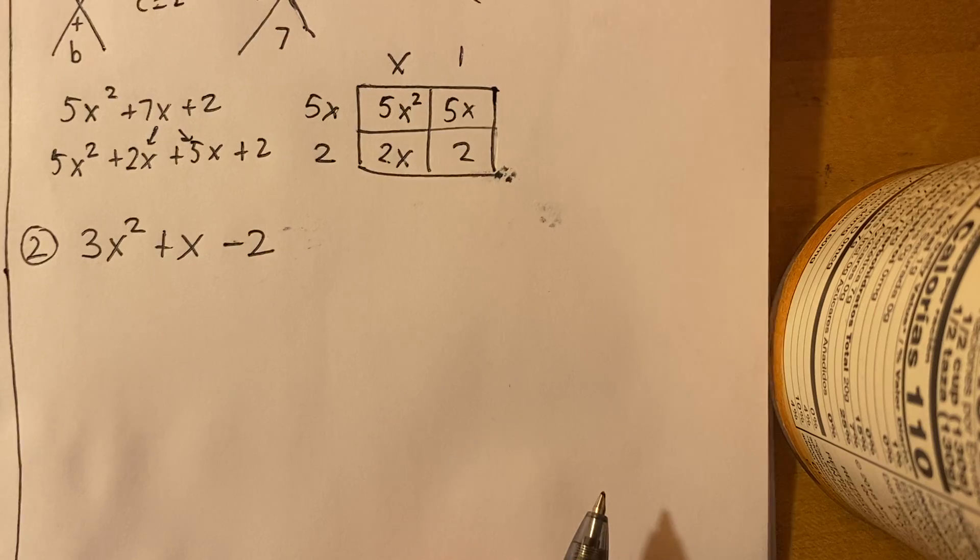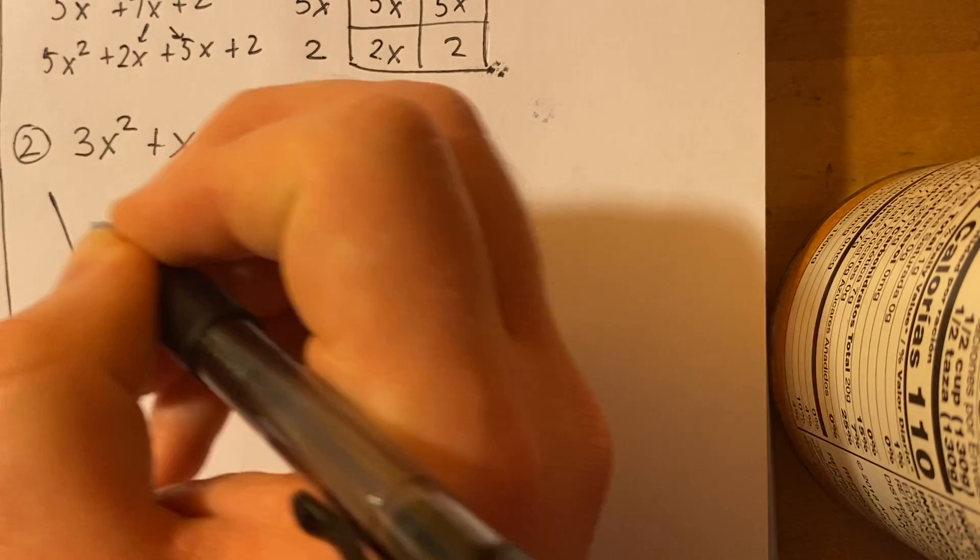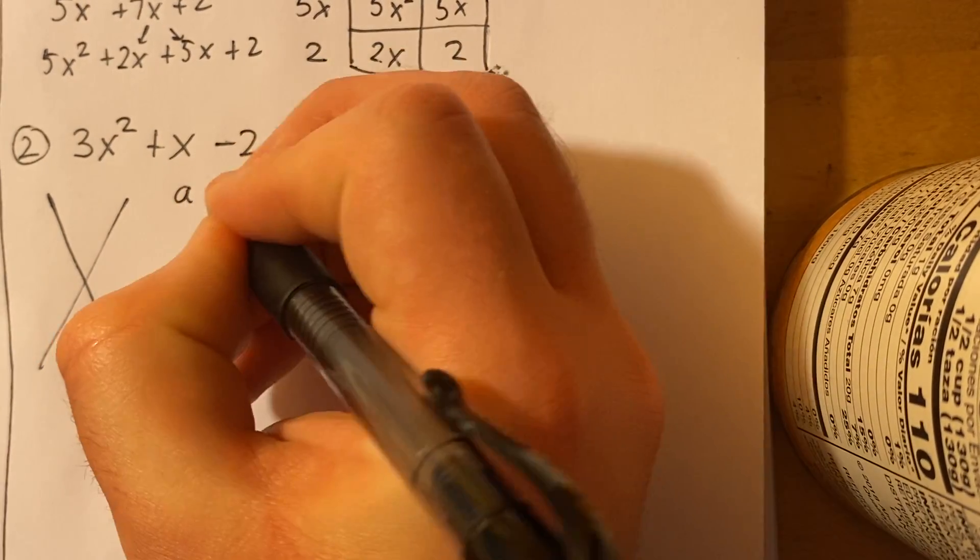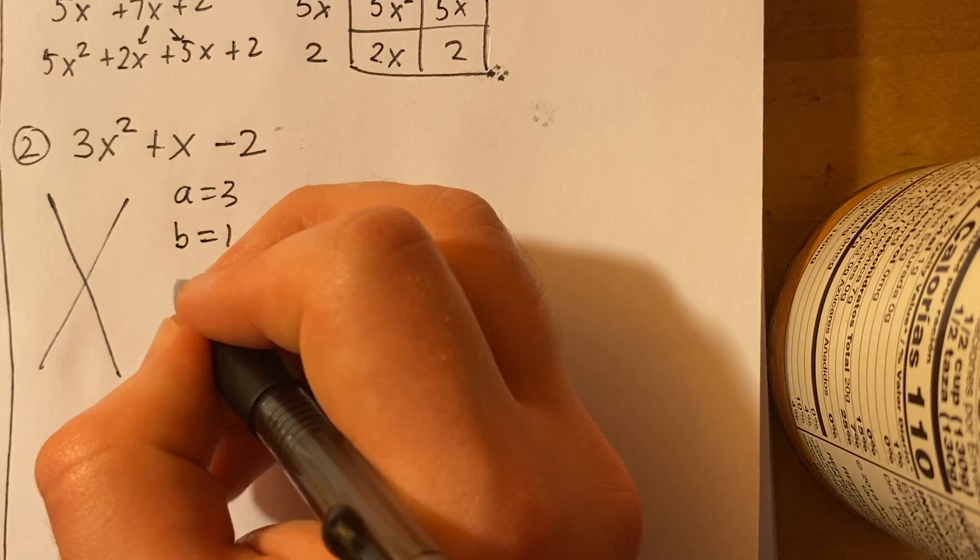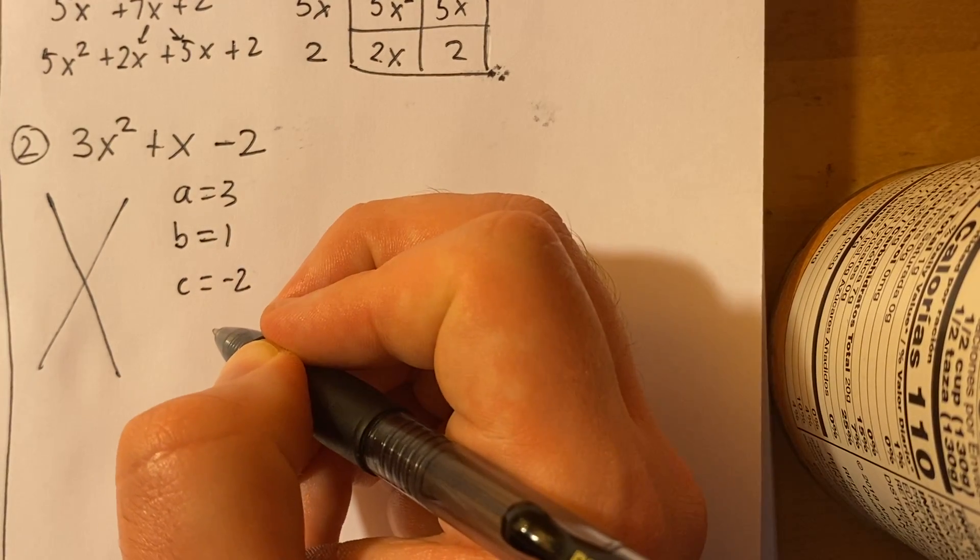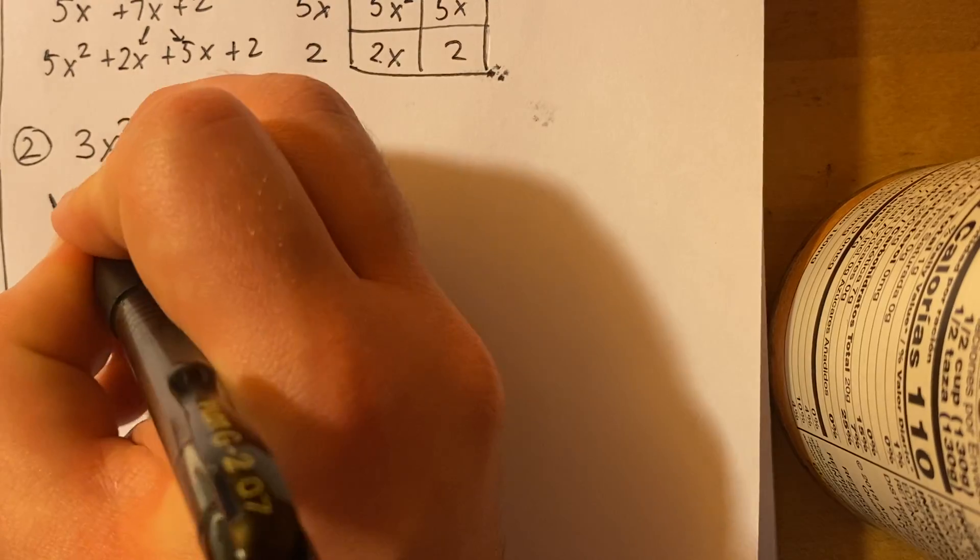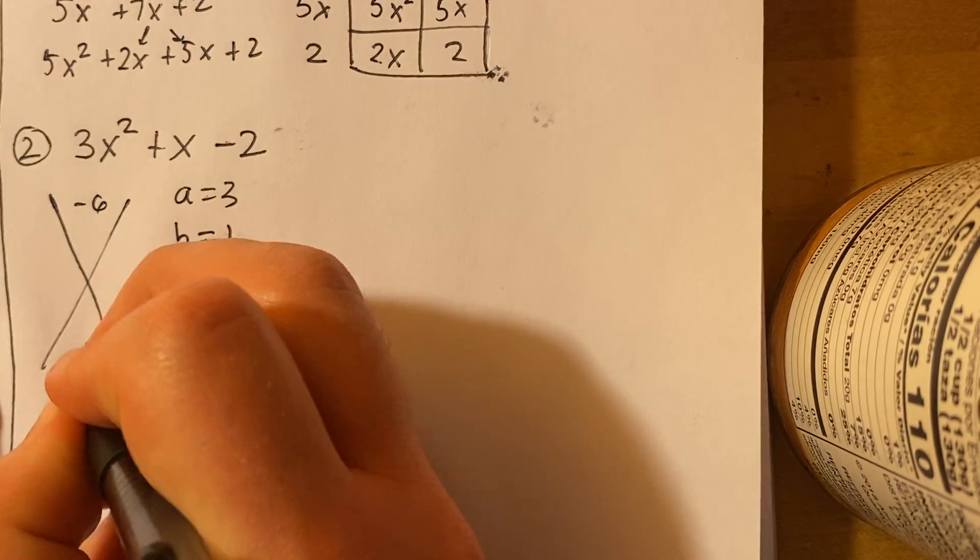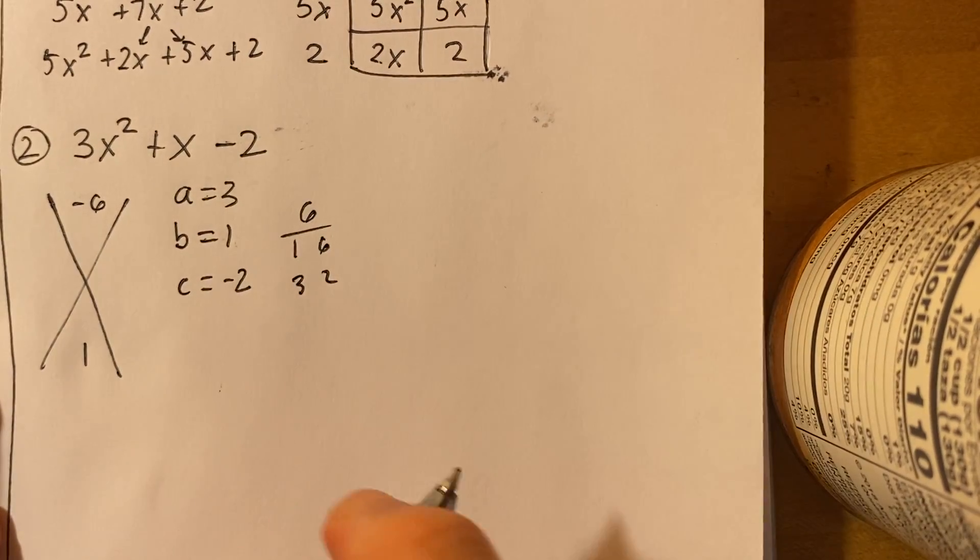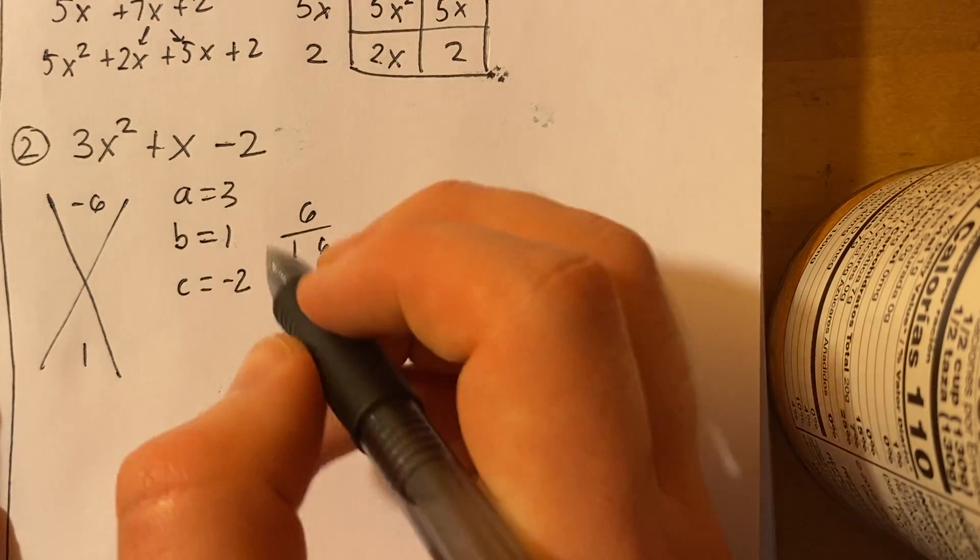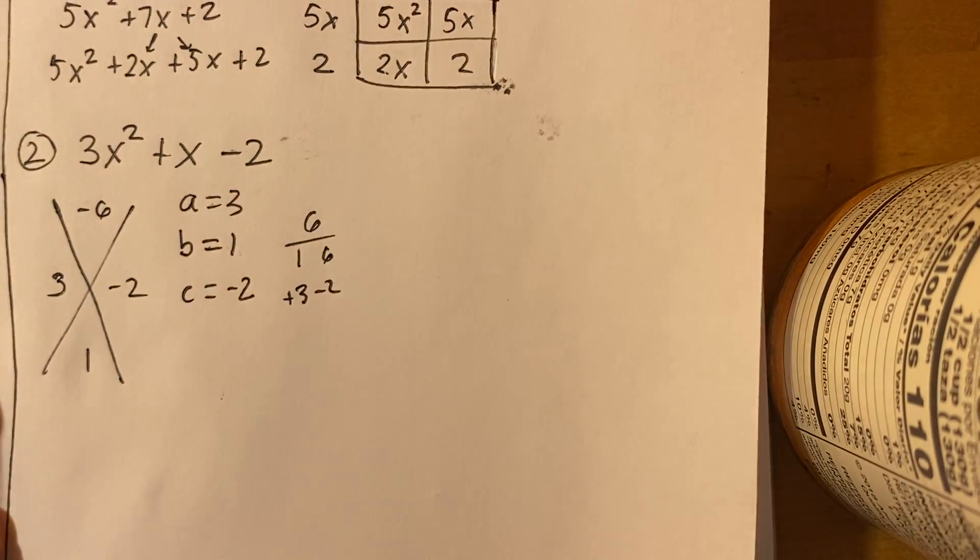On to the next example. So we have 3x² + x - 2. So our first step is to make our X. And remember, we have our a is 3, our b is 1, because there's nothing in front of that x, and then our c is negative 2. So a times c, 3 times negative 2, that's going to be negative 6. And then our b is just 1. So then we think of the factors of 6. I think 1 and 6, 3 and 2. I know that if I have a positive 3 and a negative 2, that's going to equal 1. So I'll write positive 3 on this side and then negative 2 on this side.